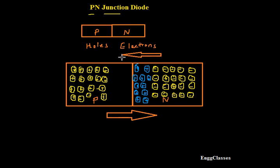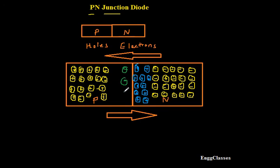Once electrons start moving to P-type semiconductor, they also start getting accumulated near the junction. This process of diffusion — movement of holes from P-type to N-type and movement of electrons from N-type to P-type — continues for some time, but not forever. After some time the process of diffusion stops.